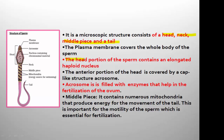The head portion of the sperm contains an elongated haploid nucleus — this is very important. As seen in the image, the head of the sperm contains a haploid elongated nucleus. The anterior portion of the head is covered by a cap-like structure called the acrosome. The acrosome is produced from the Golgi complex and is considered the largest lysosome. It provides protection to the sperm head.